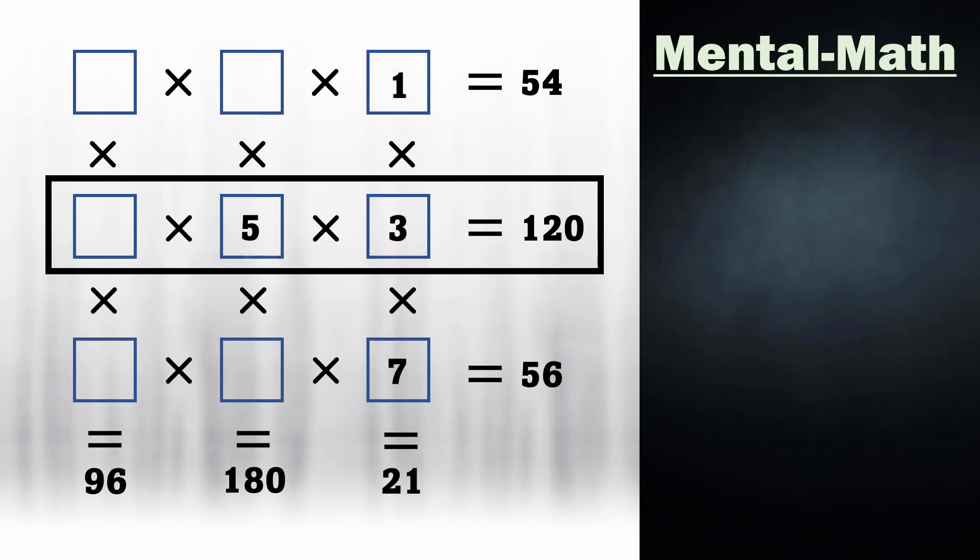In the center row, 3 times 5 is 15. 15 times what number gives the product as 120? It's simply the number 8.